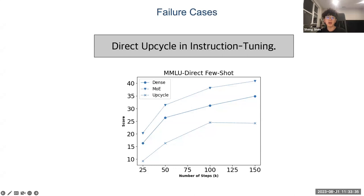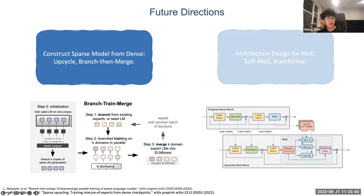There are also future directions worth introducing. One interesting area is constructing sparse models directly from dense models in different ways. One approach uses a dense model to initialize the weights for a sparse model, but you need to ensure you don't activate just top-1 gating, which may lead to expert collapse in pre-training. You also want to ensure the pre-training data is the same as what was used to pre-train the dense model. People also find you can ensemble different dense models trained on different domains to get gains during adaptation, especially in language model settings.